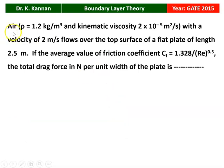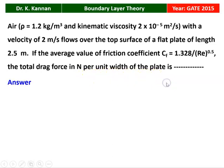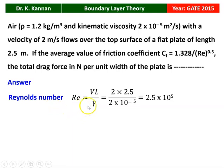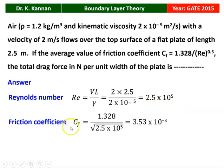The next question is from the 2015 question paper. Air of density 1.2 kg per cubic meter and kinematic viscosity 2×10⁻⁵ m²/s, with a velocity of 2 m/s, flows over the top surface of a flat plate of length 2.5 m. If the average friction coefficient Cf equals 1.328 divided by Reynolds number to the power 0.5, find the total drag force in Newtons per unit width. Reynolds number Re equals VL by nu: velocity 2 m/s, L = 2.5 m, kinematic viscosity 2×10⁻⁵, giving Re = 2.5×10⁵. Then Cf = 1.328 divided by the square root of 2.5×10⁵, which equals 3.53×10⁻³.